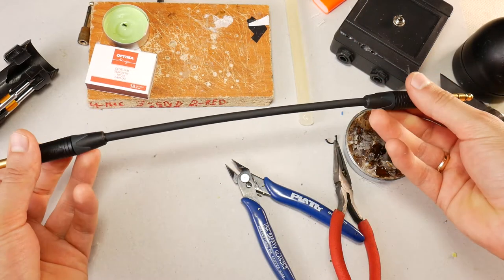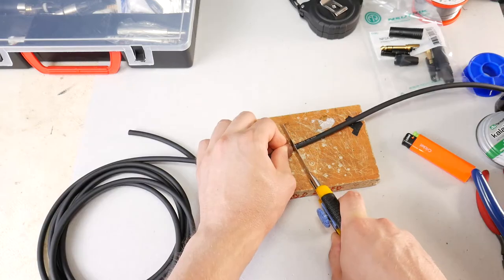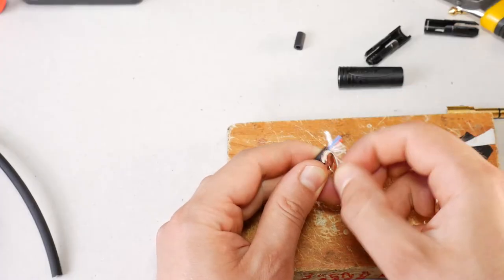Hi, friend. Today I will show you how to make a high-quality and professional-grade 6.35mm or 1/4-inch stereo jack jumper cable.